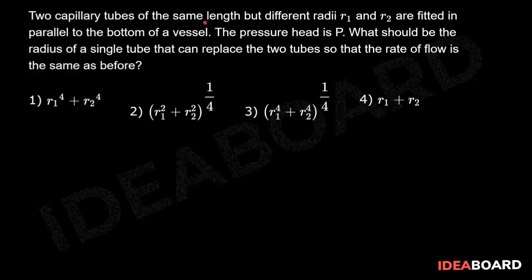Two capillary tubes of the same length but different radii R1 and R2 are fitted in parallel to the bottom of a vessel. The pressure head is P. What should be the radius of a single tube that can replace the two tubes so that the rate of flow is the same as before?